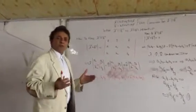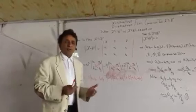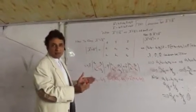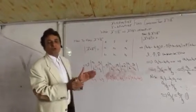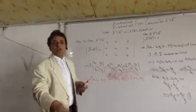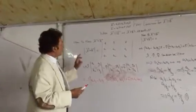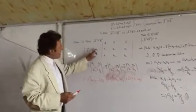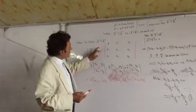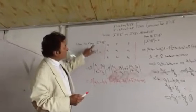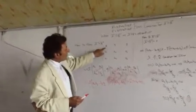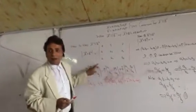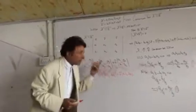Students, this is the plus 2 mathematics topic. In a very simple way, I am going to explain how to use a determinant just in one minute. Look students, to find A cross B, we write two parallel lines — this is called a determinant.